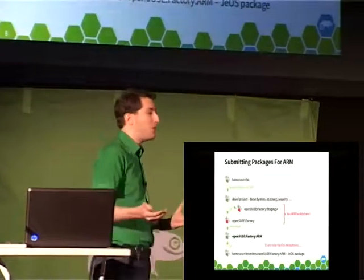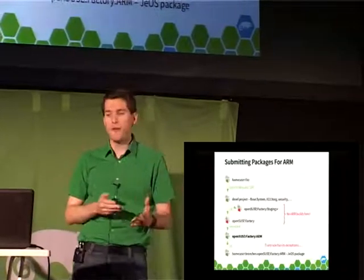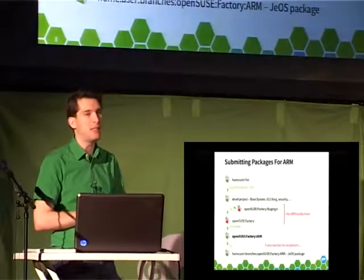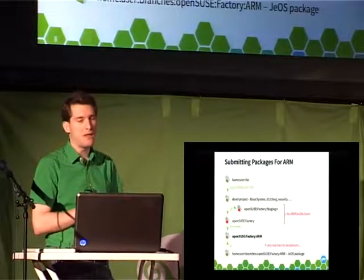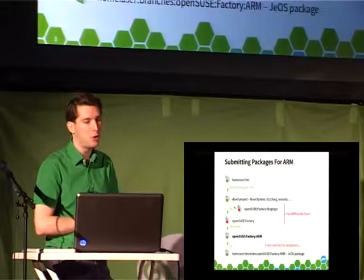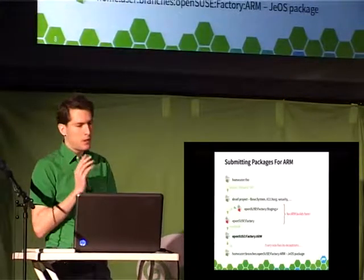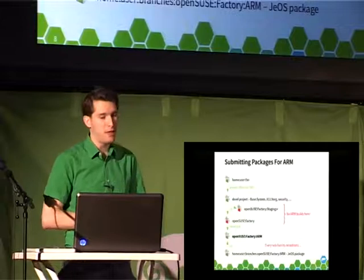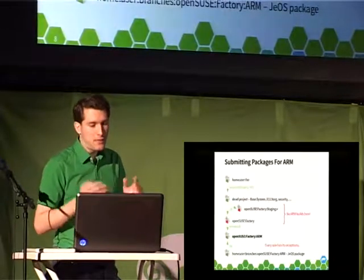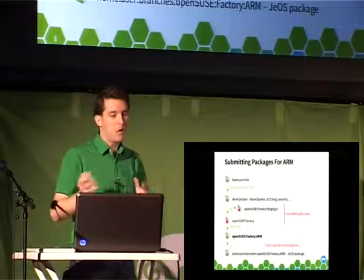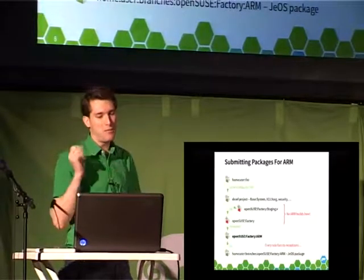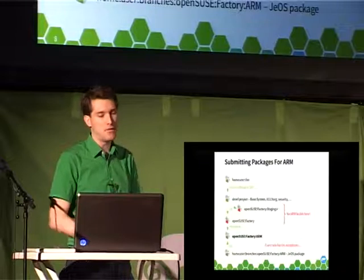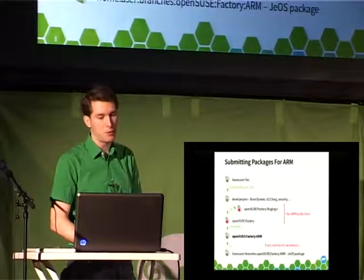Every rule has exceptions. OpenSUSE Factory ARM does contain a few packages — most notably the JEOS package, which stands for 'Just Enough OS.' Those are the images we use rather than ISO installation images for regular OpenSUSE. We also use a newer QEMU version for emulated builds than what's in factory. If you have an OpenSUSE Factory ARM-specific package, the submission process is to directly branch it from OpenSUSE Factory ARM and submit it there, without going through other develop projects or the usual factory process.